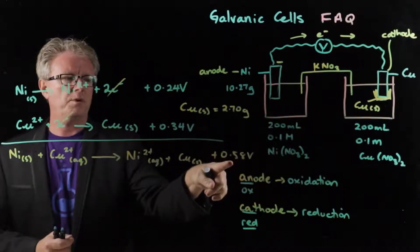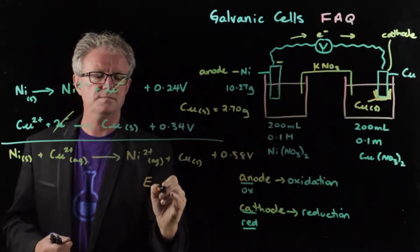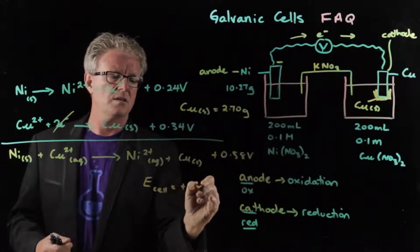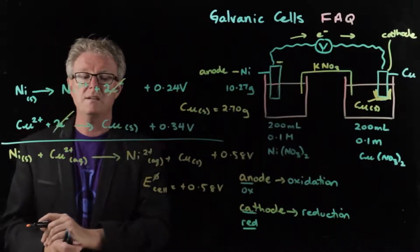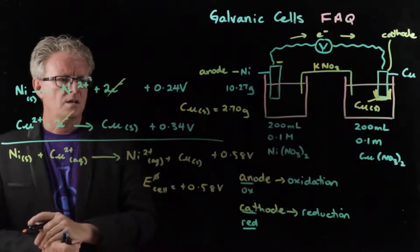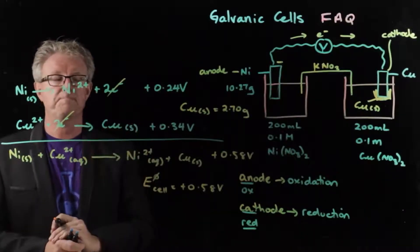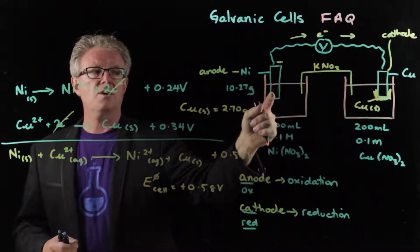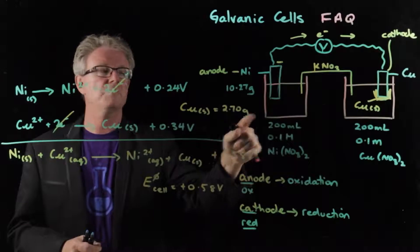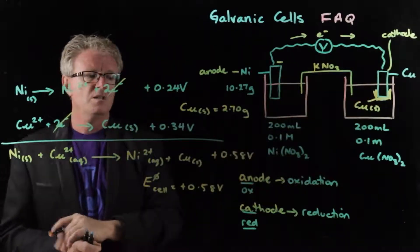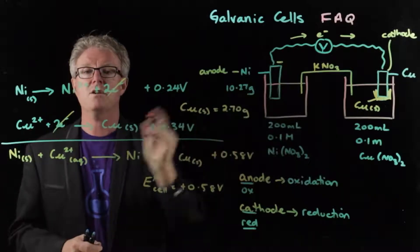So 0.58 volts is the E cell — the standard potential difference of the whole cell. Sometimes you'll see a little circle with a line through it, meaning standard E cell, which is under standard conditions. That's step one: writing the equation. We need that equation to answer our question, which is: what is the mass of the nickel anode once this cell has been turned off? We recorded that the mass of copper plated was a certain value. Let me rewrite the equation and then find the mass of the electrode.